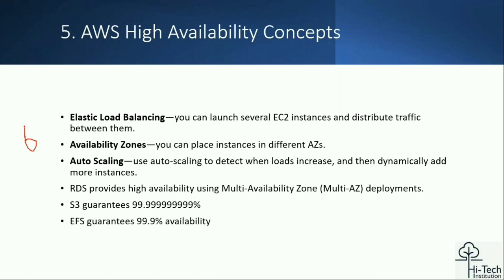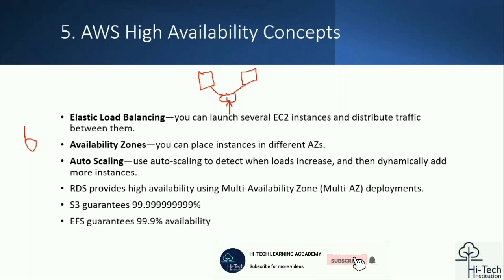When you go with Elastic Load Balancing, the concept works like this: we have EC2 instances behind the scenes and a load balancer in front. Users reach the load balancer, which forwards requests to available nodes — first request to node one, second request to node two — distributing traffic between them.